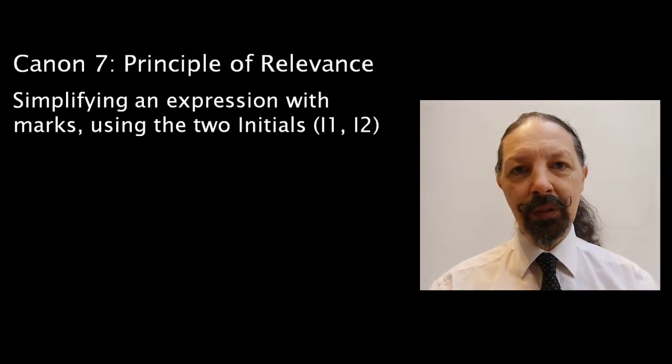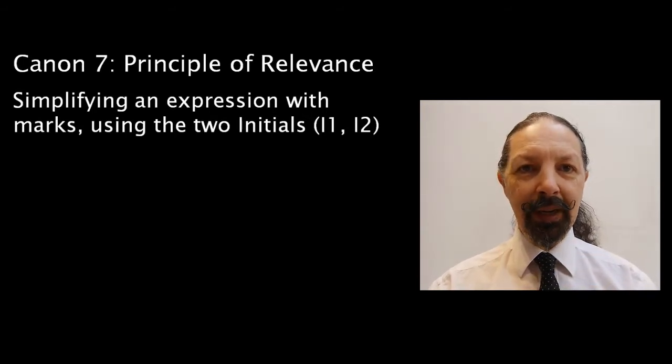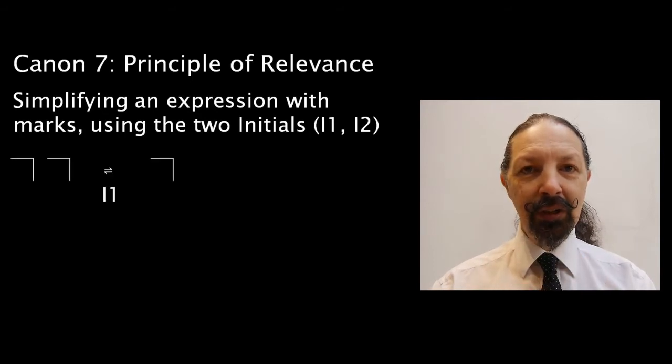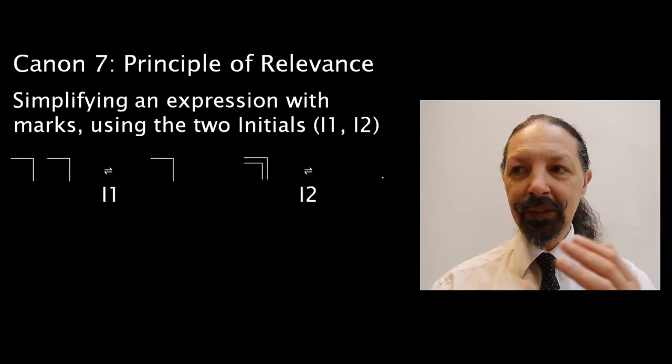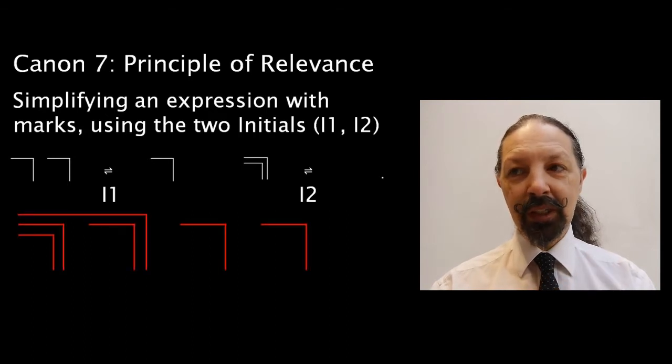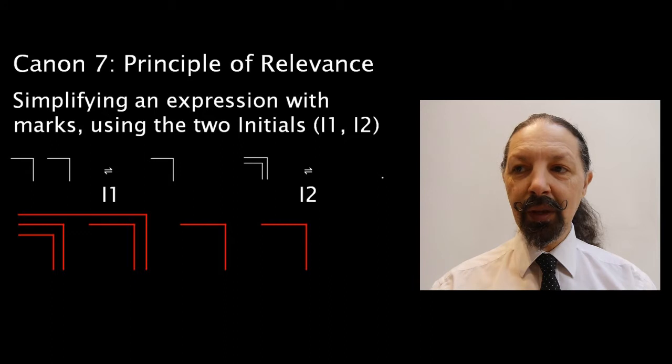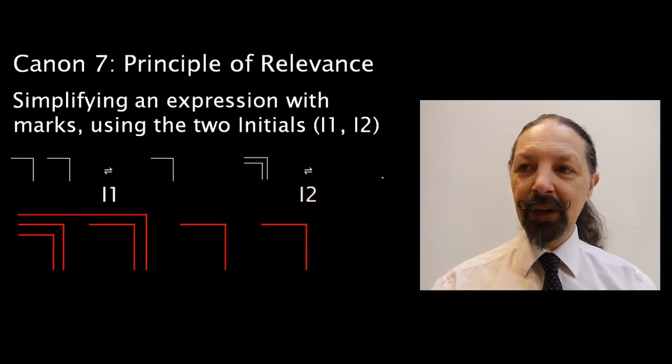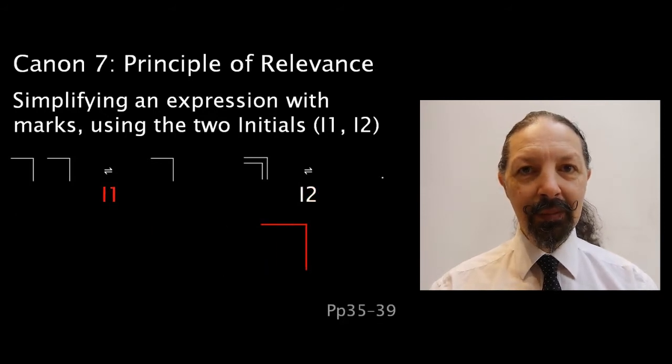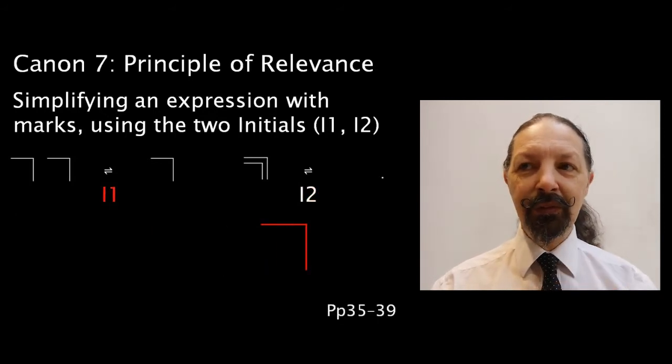Now, we're going to move towards simplifying expressions using different techniques. The first is just going to use I1 and I2. Condense and cancel. The expression we're going to use is just constructed of marks. So it's pretty simple. We take the first pair of nested marks, cancel them, do that with the second pair. We condense and we're left with a marked state. We've done this before. It's very simple.